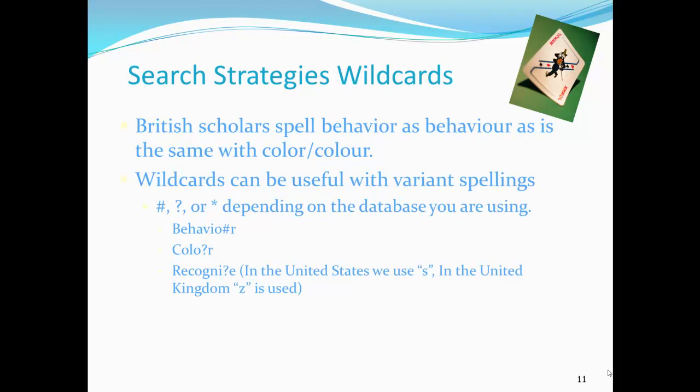Wildcards can be useful to the researcher because they help with words that have variant spellings. British scholars spell behavior with an O-U-R. It is the same with the word color — the British spell it as C-O-L-O-U-R. Researchers will also need to be aware of words like recognize and advertise; British writers use a Z. A wildcard inserted in the word to be searched will return all of these variant spellings. The character replacement symbol varies from database to database.